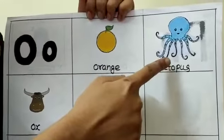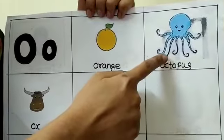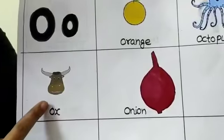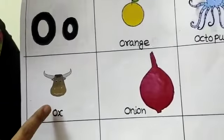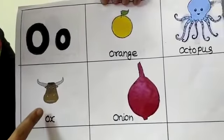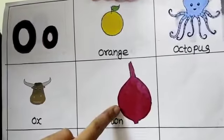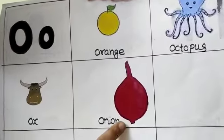O for octopus. O for octopus. O for ox. O for ox. This is O for onion. O for onion.